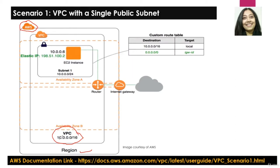This is the CIDR block of this VPC: 10.0.0.0/16. After we have created this VPC, we are expected to create one subnet. This subnet has the CIDR block of 10.0.0.0/24.